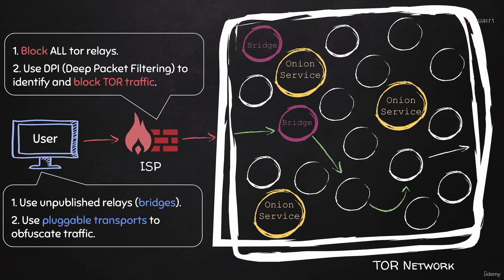In this lecture, I'm not going to talk a lot about how bridges work and how they allow us to bypass censorship and use Tor even if it's blocked. I covered this in detail previously, so if you don't remember that, please go back and revise that lecture. What I will cover here is how to configure Tails to use bridges or pluggable transports.